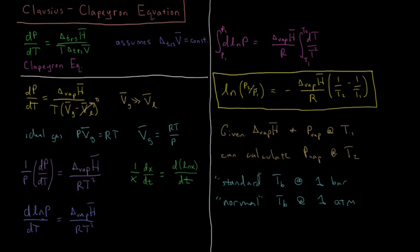The Clausius-Clapeyron equation is correct over a broader range of temperatures than the Clapeyron equation itself, because it is essentially a more advanced function that takes into account the changing molar volume of a gas as a function of temperature and pressure. It still has limitations, since it assumes the gas behaves ideally. Further corrections could be made for more accuracy, but this is a pretty good first approximation for how vapor pressure varies as a function of temperature.